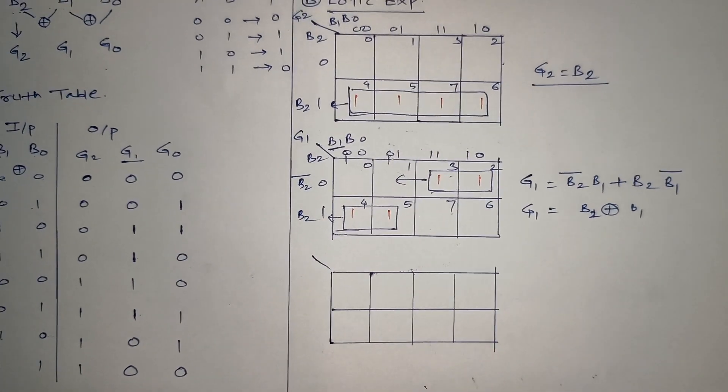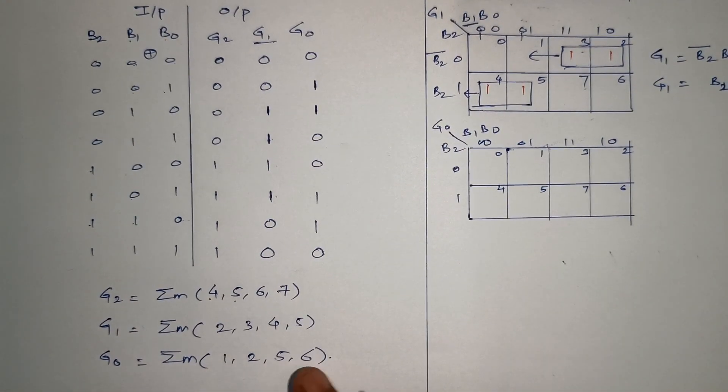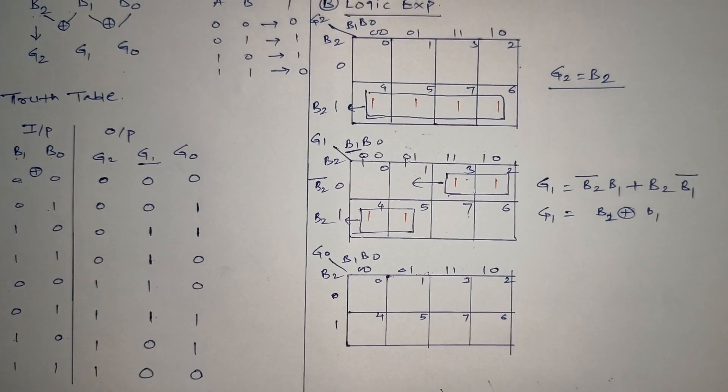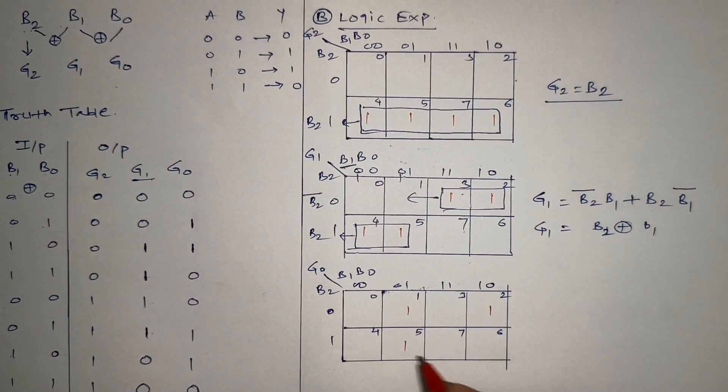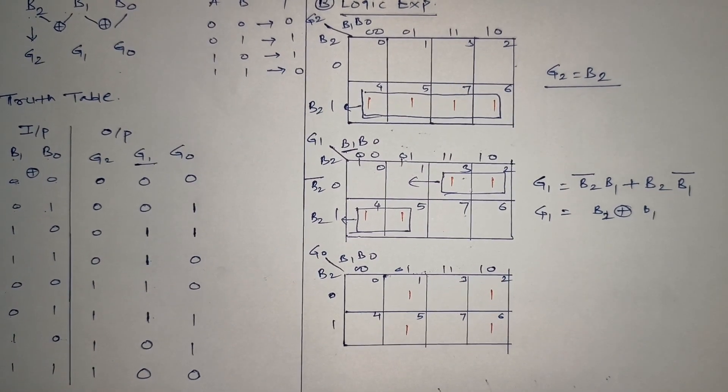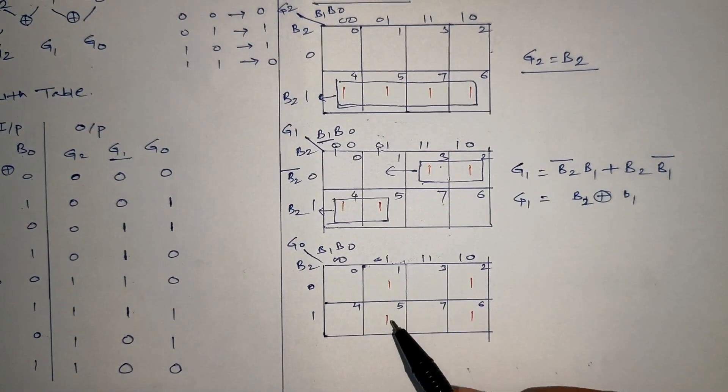Similarly, we will come across G0. In this case, G0 is 1 for 1, 2, 5, 6. Let's mark them. Now let's check for pairs, squares, or octets. 1 and 5 are adjacent, so we can form a pair between 1 and 5.